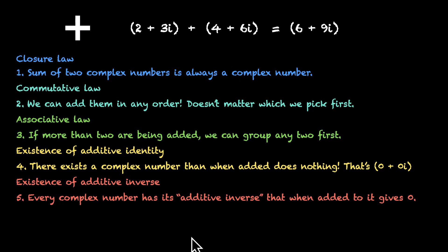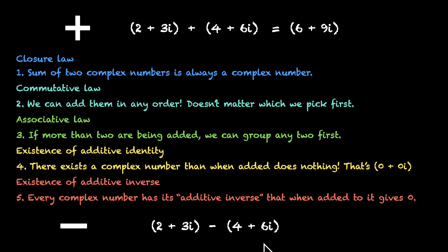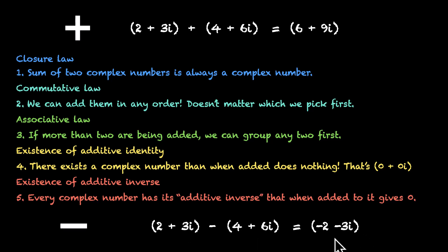What about subtraction? A quick recap: for 2+3i minus 4+6i, we subtract the real parts — 2 minus 4 is −2 — and subtract the imaginary parts — 3 minus 6 is −3i. So the result is −2−3i. Now think about which of the addition laws work for subtraction and which don't.